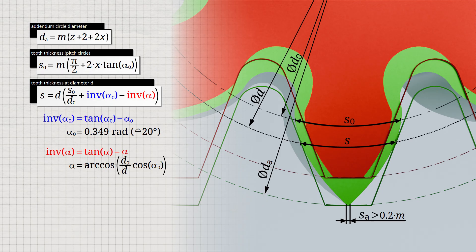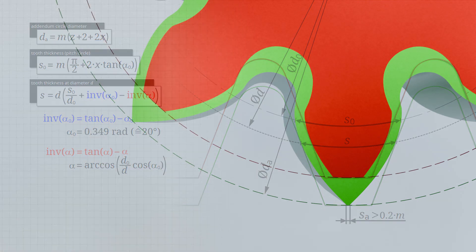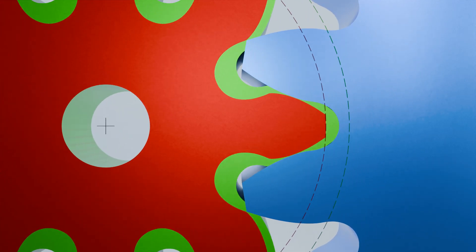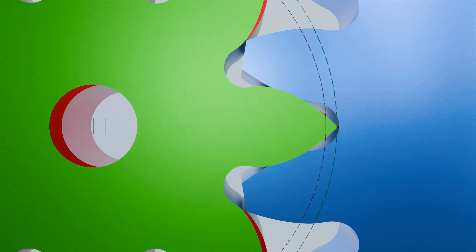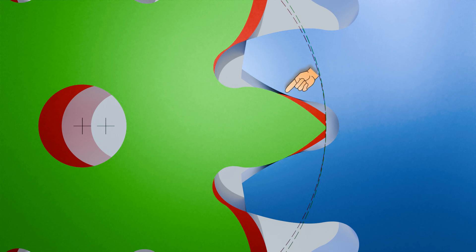The derivation of the formulas shown is explained in more detail in another video. In the following, we will take a closer look at the meshing of profile shifted gears in comparison to standard gears, starting with the center distance. At first glance, you might think that the center distance of profile shifted gears changes by the amount of the profile shift, since the gear has become larger. However, if you increase the center distance of the corrected green gear by the amount of the profile shift, there is a slight backlash. This is due to the fact that profile shifted gears use a part of the involute further out as the tooth profile, meaning the tooth profile curves away before it touches the tooth of the opposite gear. To achieve backlash-free meshing, the gears must be moved together slightly, which reduces the center distance a little.